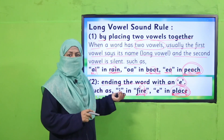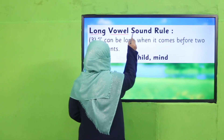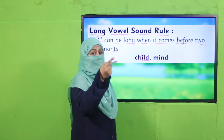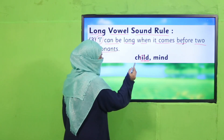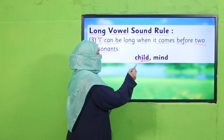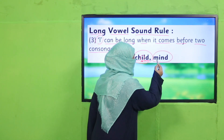The fourth rule for long vowel sound: I can be long when it comes before two consonants. When you see the vowel I in a word followed by two consonants — a consonant cluster of two or three consonants — the I gives its long sound. For example: 'child' — the I gives its long sound. Likewise: 'mind.'